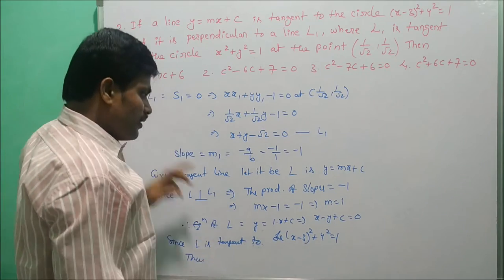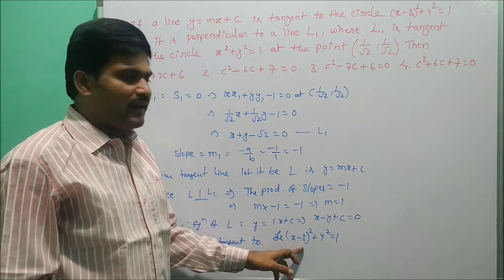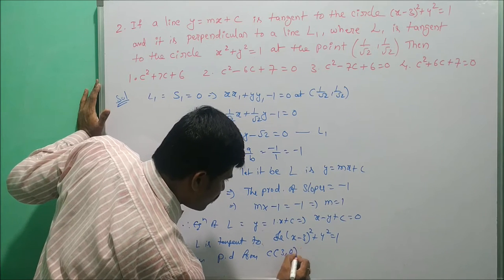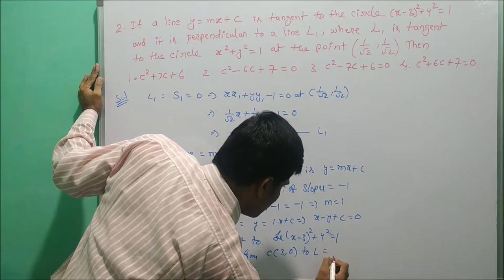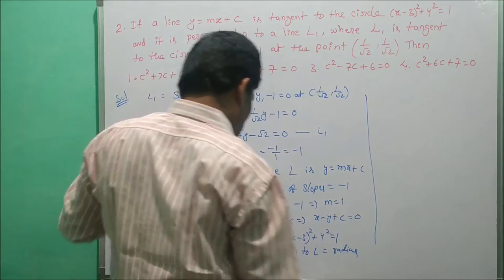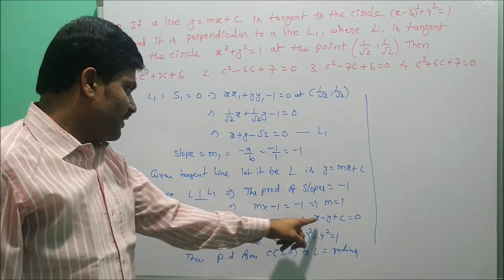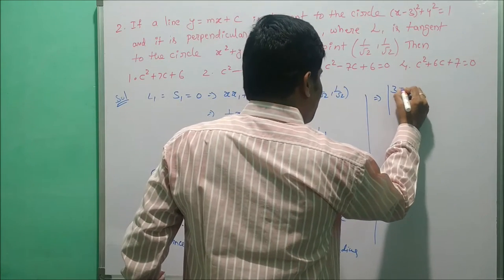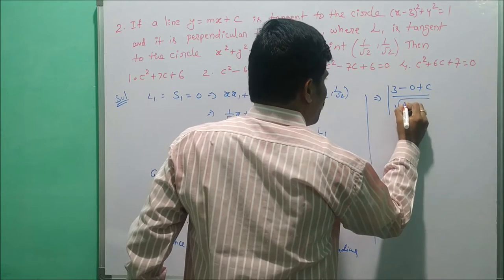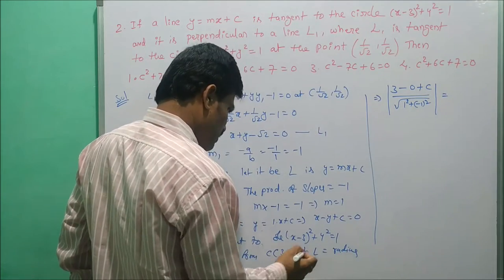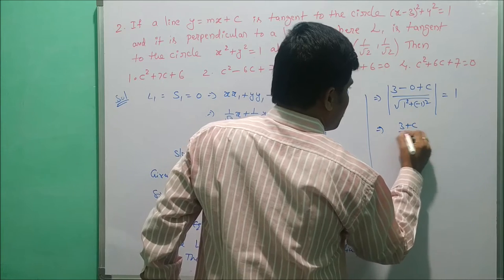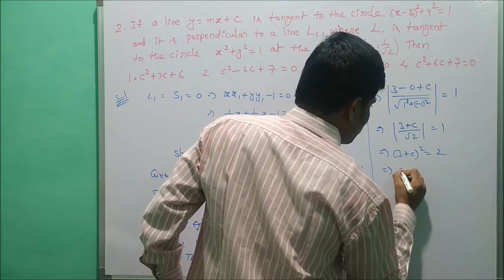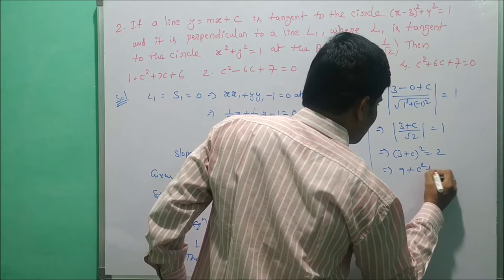Since L is tangent to the circle (x - 3)² + y² = 1, the perpendicular distance from the center to the line equals the radius. Perpendicular distance from C(3, 0) to L: |3 - 0 + c| / √(1² + (-1)²) = radius = 1. Squaring both sides: (3 + c)² = 2.